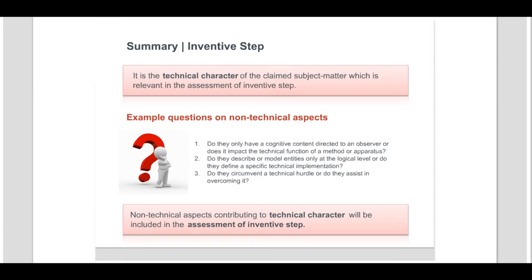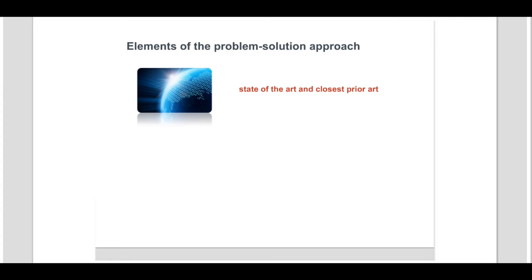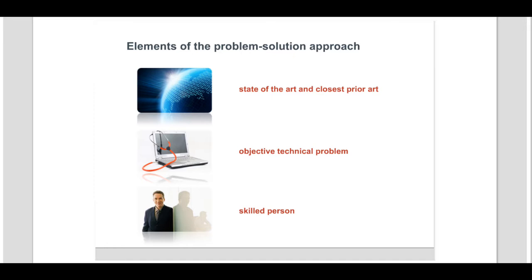Now that we have identified what is to be taken into consideration for inventive step, let us look at the elements of the problem-solution approach itself. The following elements and questions have to be taken into consideration: state of the art and closest prior art — what is to be considered as the state of the art from which the closest prior art is to be established? Objective technical problem — how is the objective technical problem defined? Skilled person — what are his or her technical abilities? We will now look at each of these elements in turn.